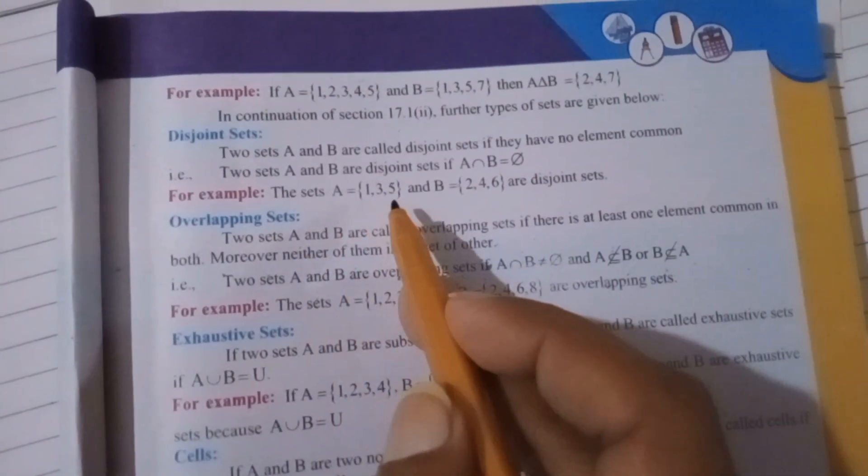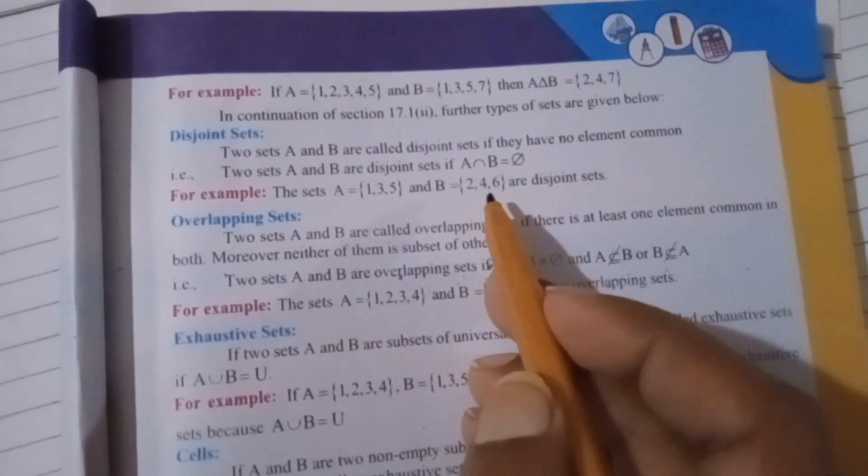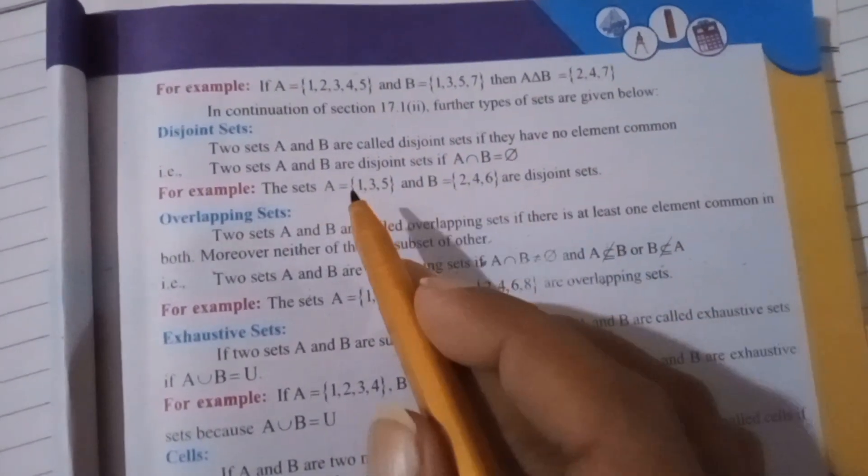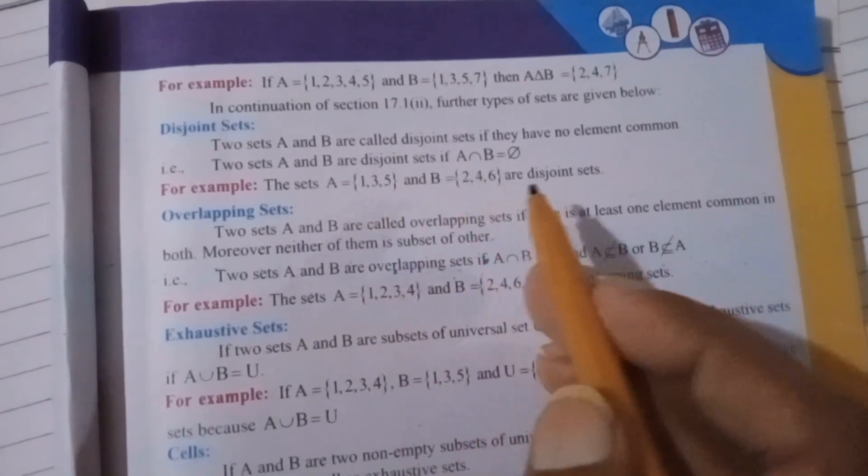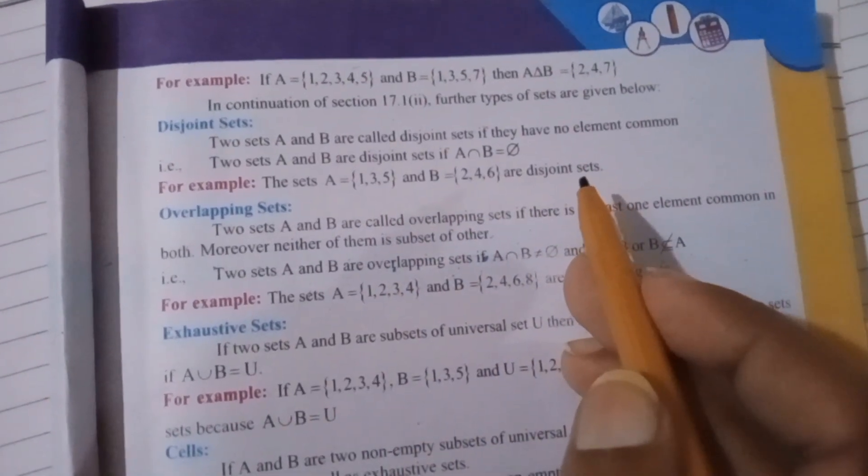For example, if set A is {1,3,5} and set B is {2,4,6}, they are disjoint sets. This means there is no element common in this case. You can see that set A has different numbers and set B has different numbers.